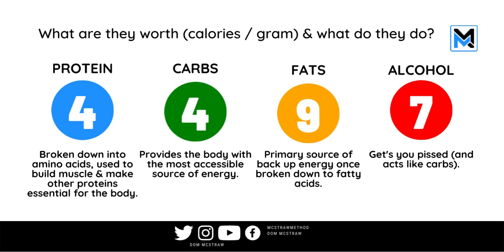So what are they worth in terms of calories per gram, and what do they do? Protein, like carbohydrates, has four calories per gram. Protein gets broken down into amino acids within your body — it's used to make and build your muscles, aid and repair them, and help make other proteins essential for your body. Carbohydrates are also four calories per gram and provide the body with the most accessible sources of energy.